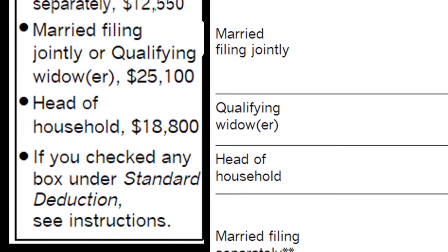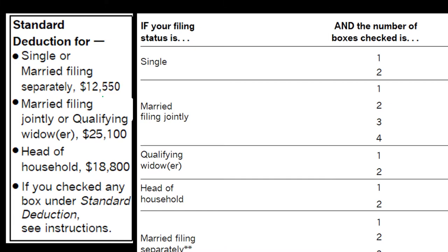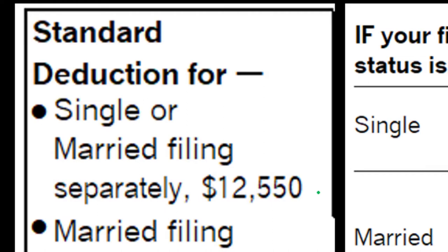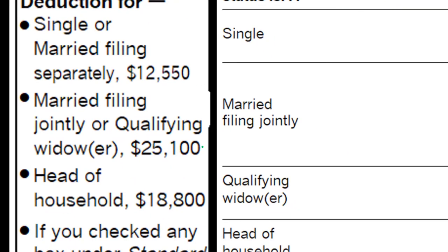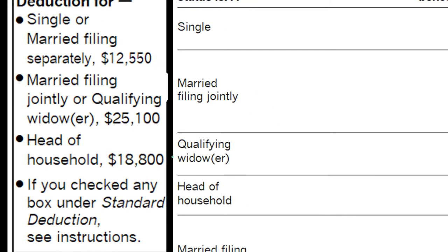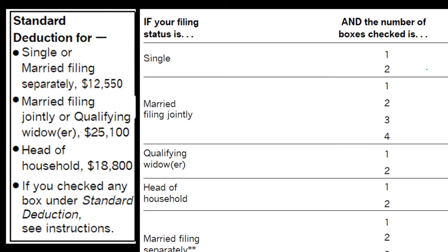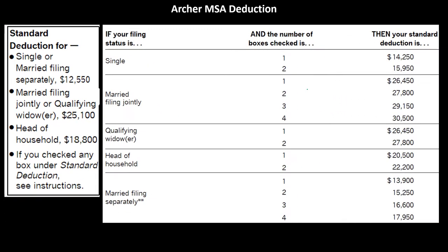These are the standard deductions you want to keep in mind. They're listed on the left-hand side of the tax return. The easiest way to remember the range is: the standard deduction for a single filer is $12,550, then double it for married filing jointly, and head of household is somewhere in between. You increase them if certain conditions are met, including being over a certain age limit or if blind.